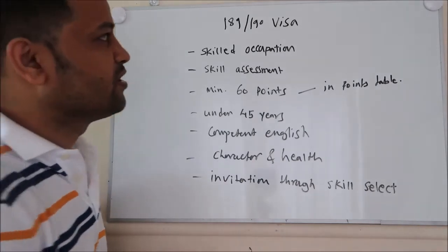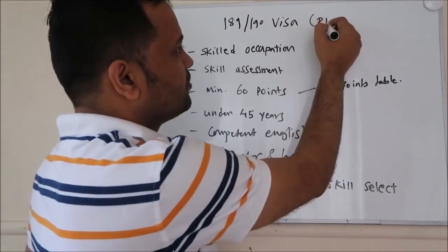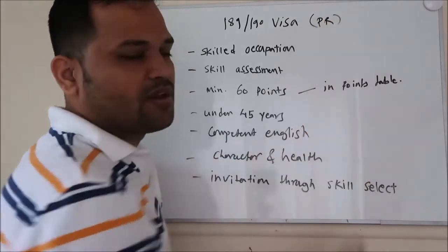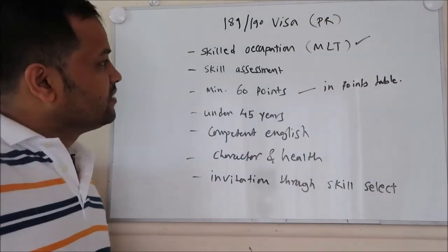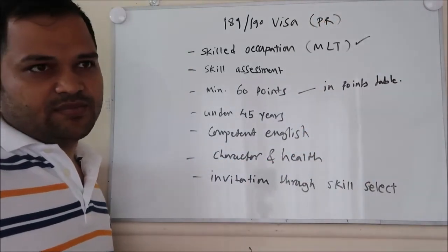These are the PR visas, which means you can live in Australia permanently. Next, you have to do the skill assessment.